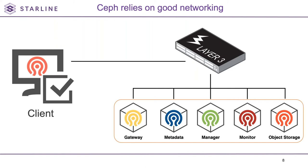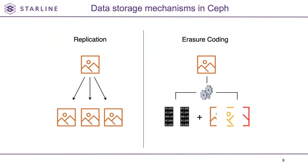Ceph's performance relies heavily on good networking. Within a Ceph cluster, all services and nodes are always actively interacting with each other over the network, always reporting their status and always aware of each other's status and function. Ceph uses two main mechanisms to store data: replication and erasure coding.